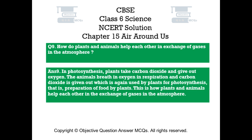Question number 9: How do plants and animals help each other in the exchange of gases in the atmosphere? Answer number 9: In photosynthesis, plants take carbon dioxide and give out oxygen. Animals breathe in oxygen during respiration and give out carbon dioxide, which is again used by plants for photosynthesis, that is, the preparation of food by plants. This is how plants and animals help each other in the exchange of gases in the atmosphere.